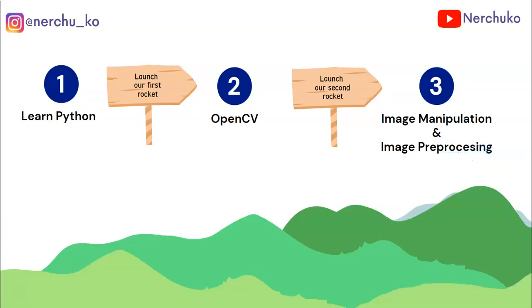Image rotation — this is data augmentation in deep learning, and it is also used for this. We can apply scaling and resizing. This all comes from image processing.